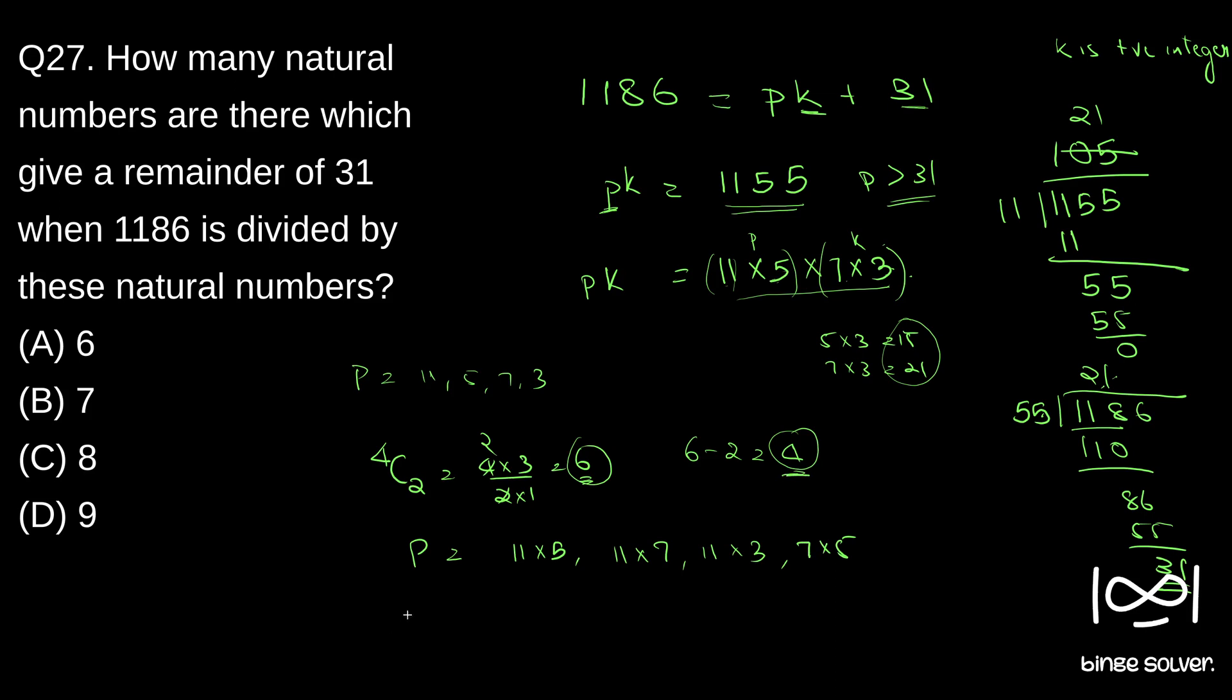So similarly, if you want to select 3, we will get 4C3 or 4C3 is nothing but 4C1, which is 4 into, just 4 into 3 into 2. With 3 into 2, we get 4 valid cases. So we will get 4 valid cases when we pick 3.